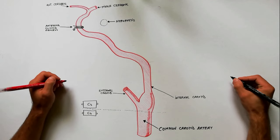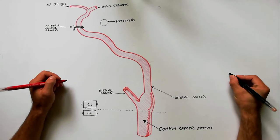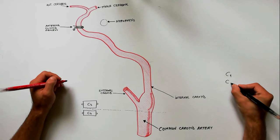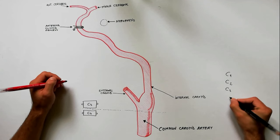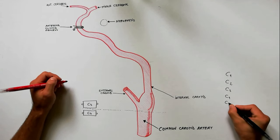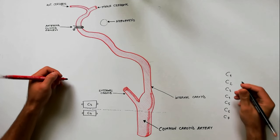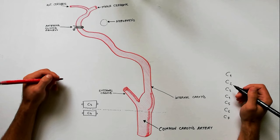Clinically, the classification system of the internal carotid artery describes seven anatomical segments, each with a corresponding alphanumeric identifier, from C1 to C7. The segments of the internal carotid artery are as follows.